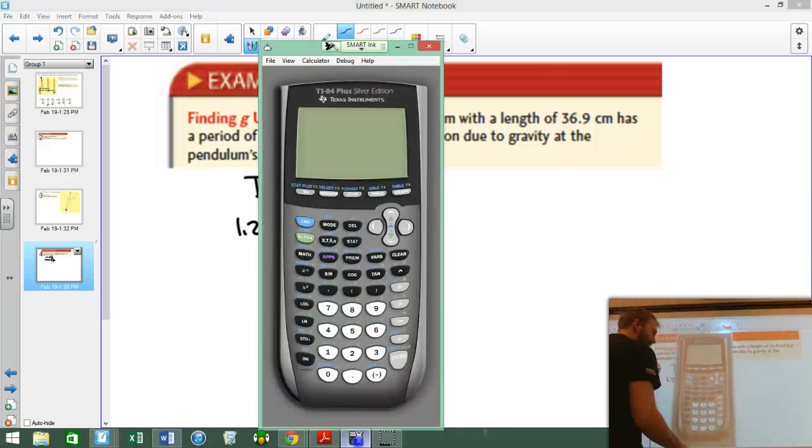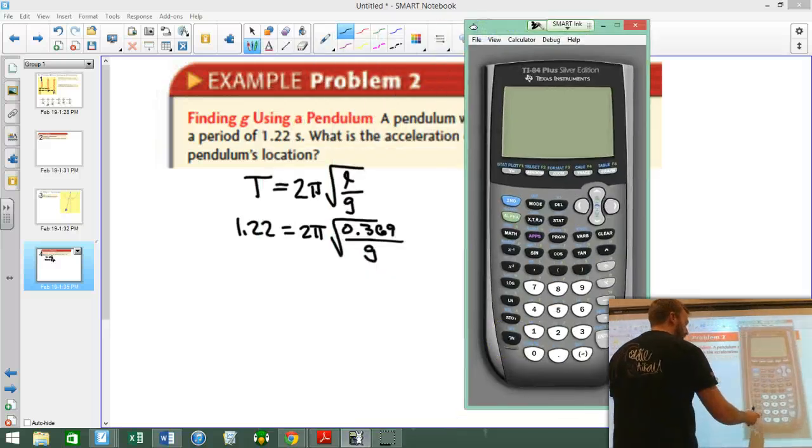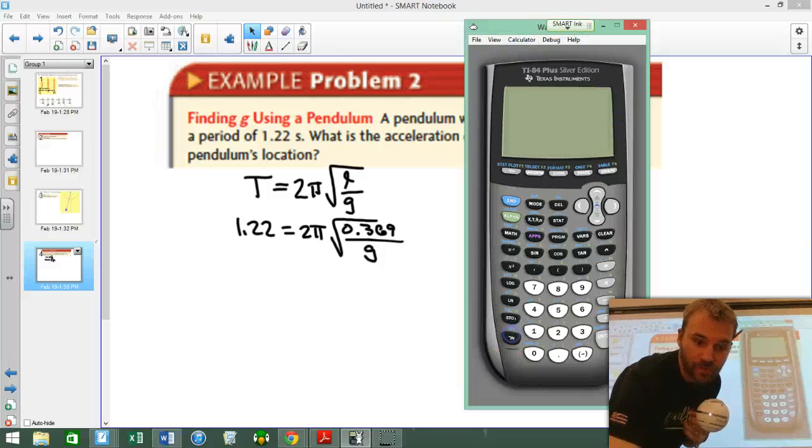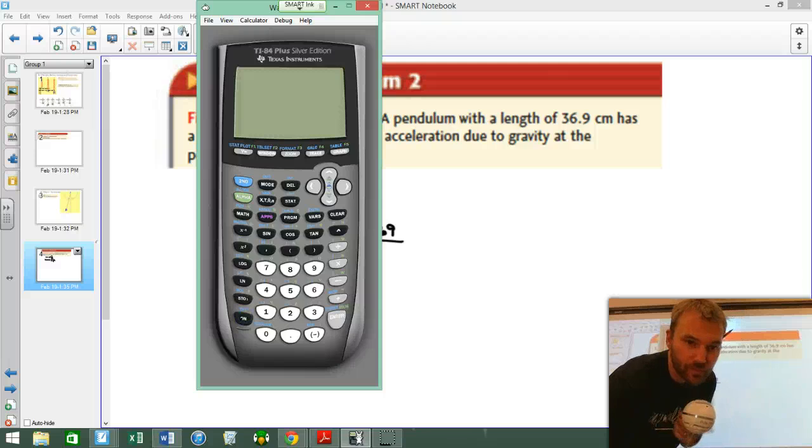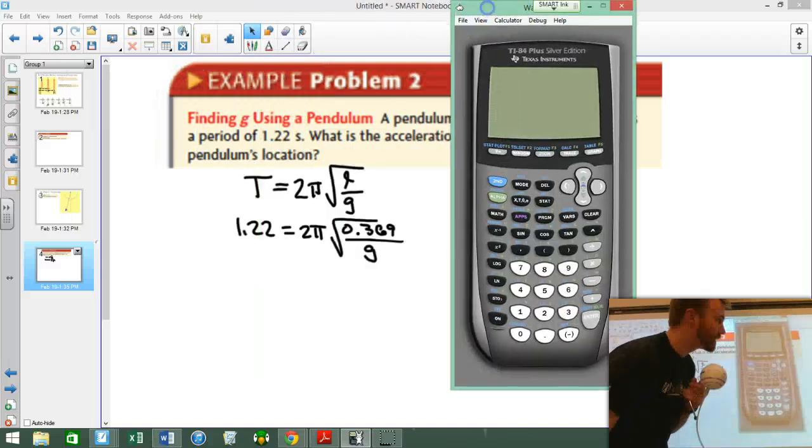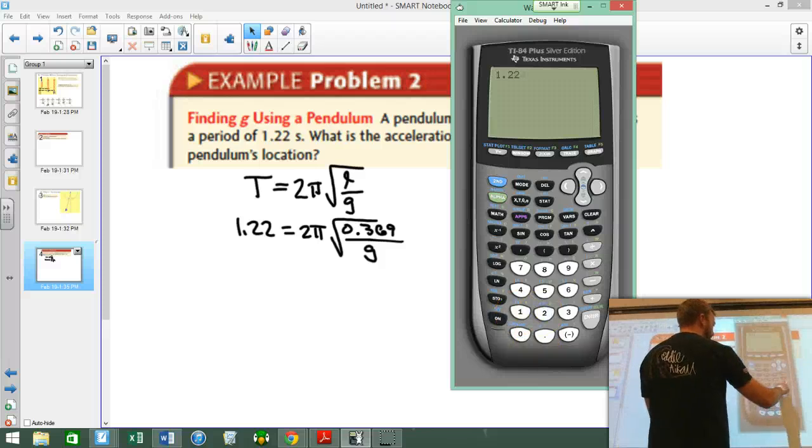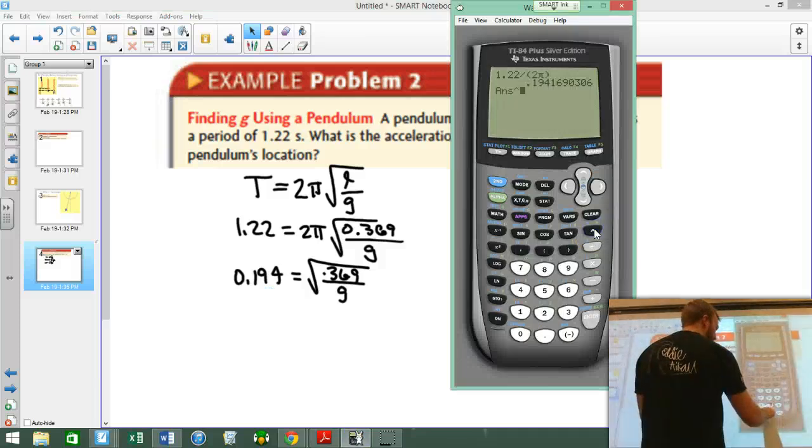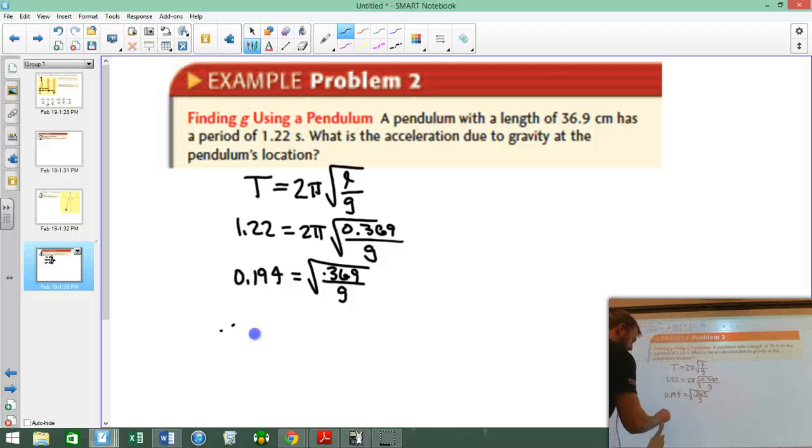So the first thing I'm going to do is divide both sides by 2 pi. So I'm going to take out my calculator, come over here. There we go. I'm going to take 1.22 divided by, make sure I put parentheses around my 2 pi, 0.194. So I get 0.194 equals the square root of 0.369 over G. I'm going to square both sides now to get rid of that radical. So I'll square it, and I get 0.0377.